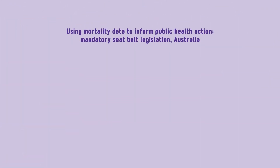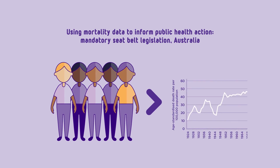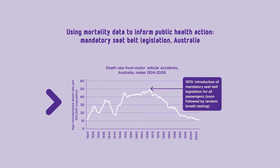By gathering this information through the Civil Registration System, a country can then collect, compile, analyse and disseminate information about the population. This data provides accurate information about the population, the health and demographics of the people, so that better social, economic, infrastructure and health policy decisions and interventions can be made.